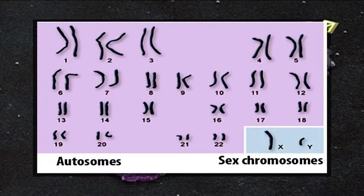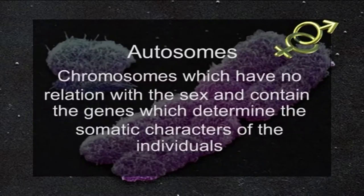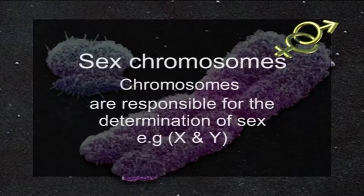Two types of chromosomes were recognized: number one, autosomes, and number two, sex chromosomes. The chromosomes which have no relation with the sex and contain the genes which determine the somatic characters of the individual are known as autosomes. The chromosomes which are responsible for the determination of sex are known as sex chromosomes — for example, X and Y chromosomes.